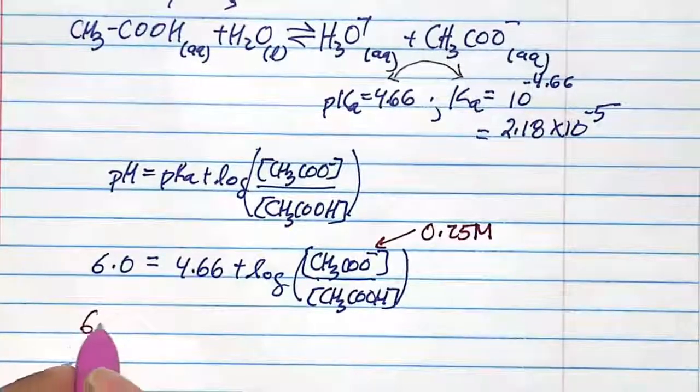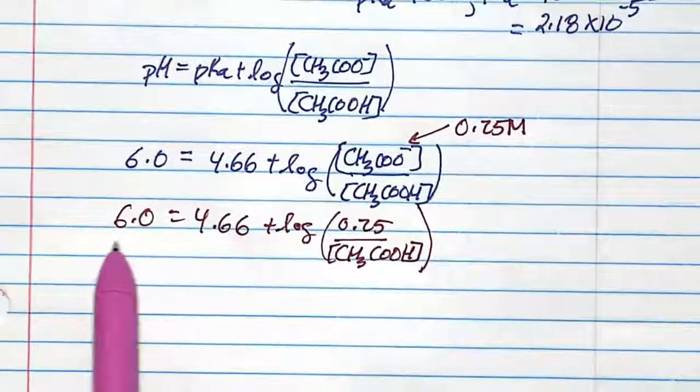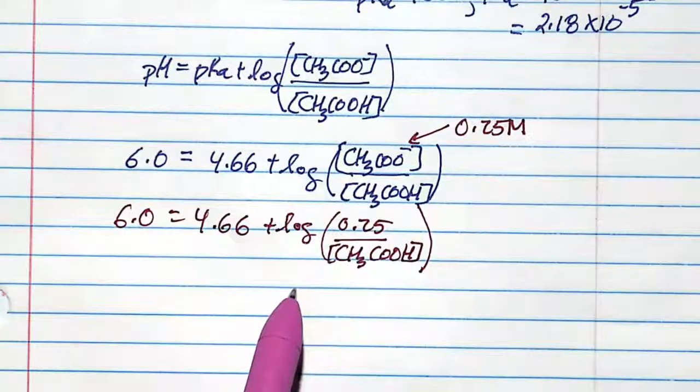The pKa that was given to us is 4.66. 6.0 equals 4.66 plus log so that we can get a pH of 6 in this conjugate acid conjugate base buffer.